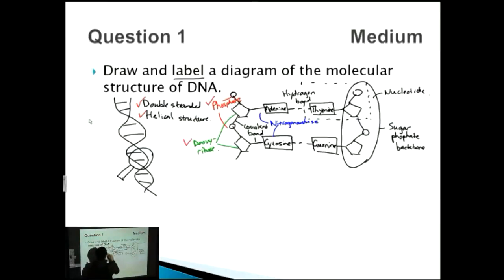We label the phosphate, the deoxyribose, as well as these nitrogenous bases, cytosine and guanine. Okay, so that's over here. The covalent bond should give us the mark, as well as the hydrogen bonding, as well as the nucleotide and the sugar phosphate bonds.